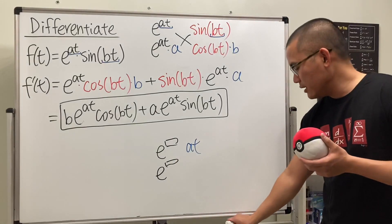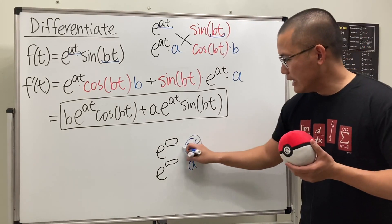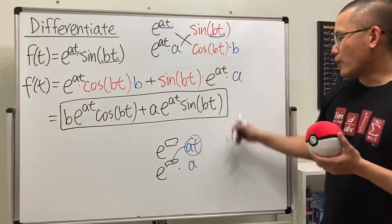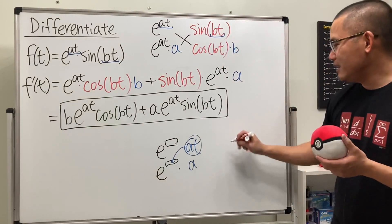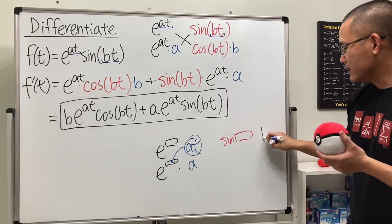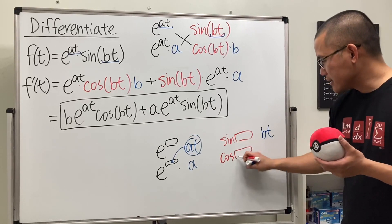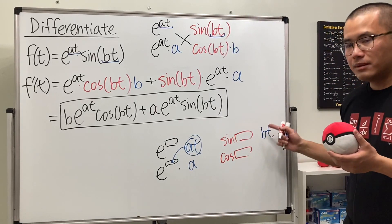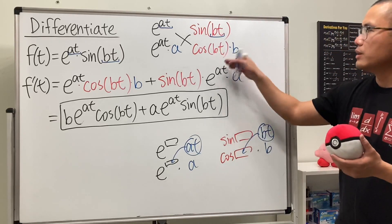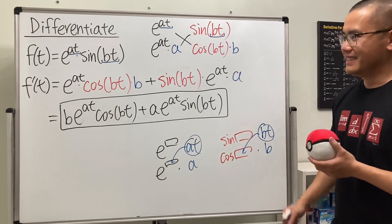Differentiating at, where a is just a constant, we get a. We put this in the box and multiply — that's how we get that term. For sine of bt, we have sine of a box where the inner function is bt. Differentiating sine gives cosine of the box, and differentiating bt gives b. We put b in the box and multiply, and that's exactly how we get that term. Hopefully everything's clear — that's it!